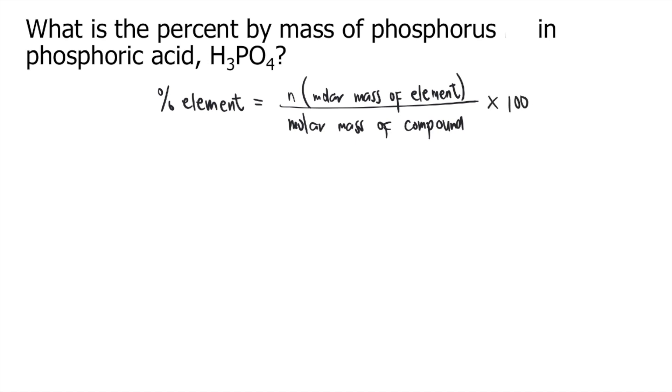So in the problem, we are asked about the percent by mass of phosphorus. So that's equal to N. N stands for the number of phosphorus in the compound. Our compound is H3PO4. And as you can see, there's only one phosphorus atom in H3PO4.